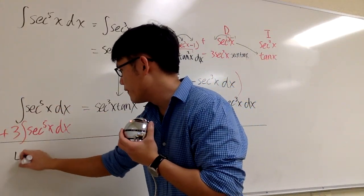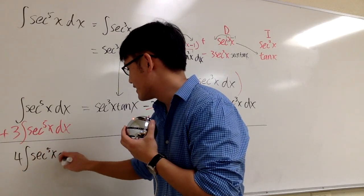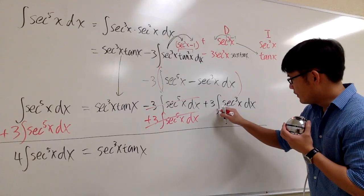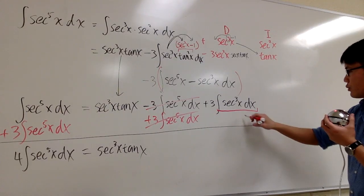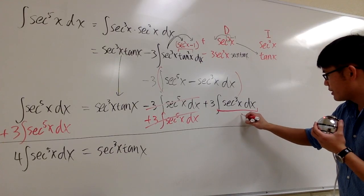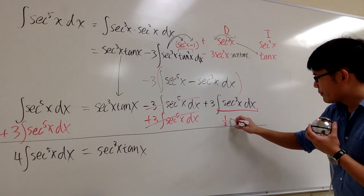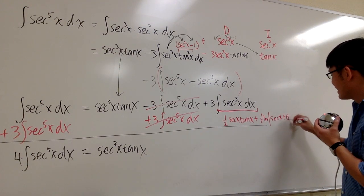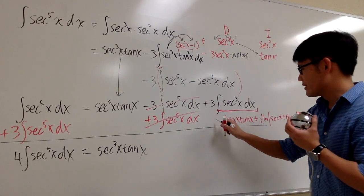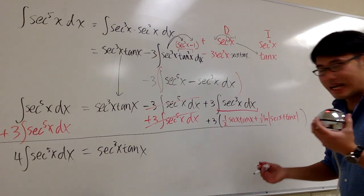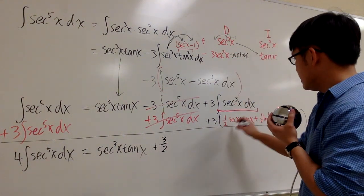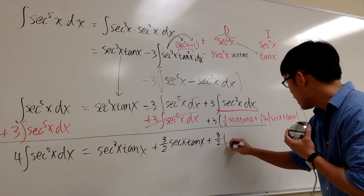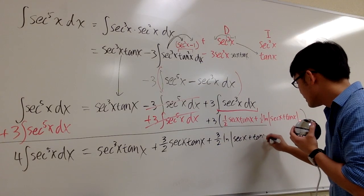That gives us 4 times the integral of secant to the fifth power x dx equals secant to the third power x tangent x plus 3 times the integral of secant to the third power x dx. The integral of secant to the third power x is one half secant x tangent x plus one half ln of the absolute value of secant x plus tangent x. So 3 times that is plus 3 halves secant x tangent x plus 3 over 2 ln of the absolute value of secant x plus tangent x.